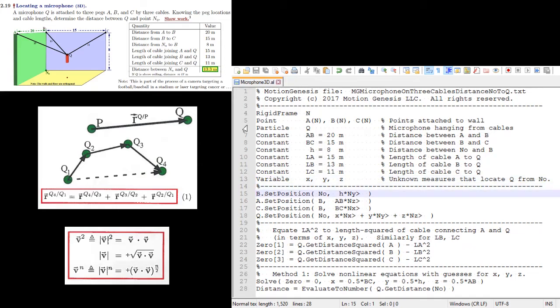In Motion Genesis, we can define the position of any point from any other point in our space. In line 15, we are creating the position vector 2B from N0. And that position vector is h, which we said for our problem setup is 8 meters in the ny direction. We can also set up the position 2A from B, which is AB, in the positive nz direction. And lastly, we can set the position vector 2C from B using our constant BC. We can also write our unknowns, which is the position of Q from N0, which is x·nx plus y·ny plus z·nz.